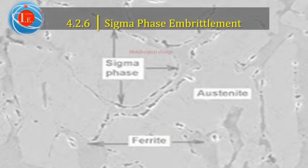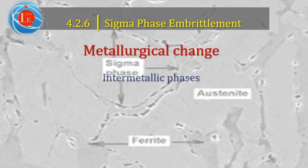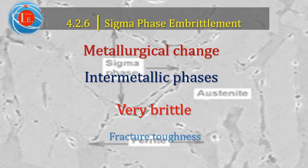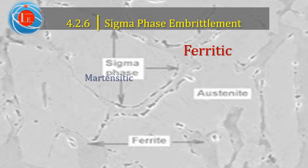Sigma phase embrittlement is a metallurgical change that occurs in the material microstructure due to precipitation of intermetallic phases. These intermetallic phases are very brittle and hence have a deleterious effect upon mechanical properties, in particular the fracture toughness. This phenomenon occurs in iron-chromium materials such as ferritic, martensitic, austenitic, and duplex stainless steels.